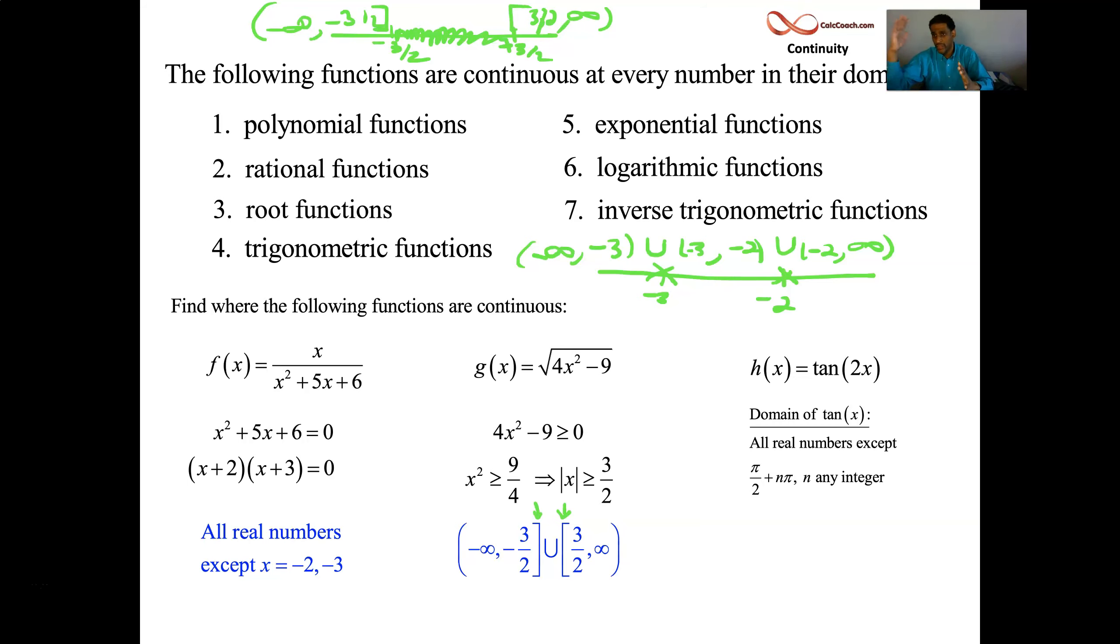So the way you can say that would be pi over 2 plus n pi. So pi over 2 plus pi would take you to 3 pi over 2. And taking away pi would be negative 3 pi over 2. So n could be any integer. n is 1, 3 pi over 2 is gone. n is 2, 5 pi over 2 is gone. n is negative 1, negative 3 pi over 2 is gone. n is negative 2, negative 5 pi over 2 is gone. All those guys are gone. All real numbers except those guys. That's for tan.